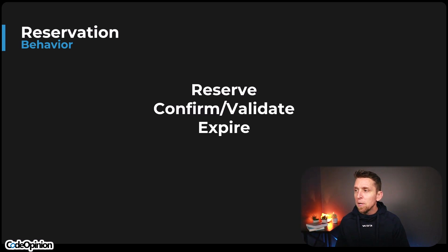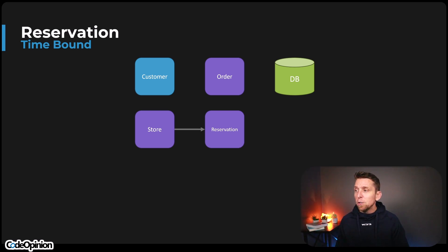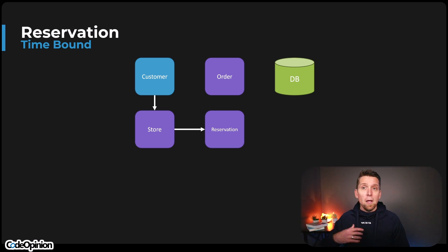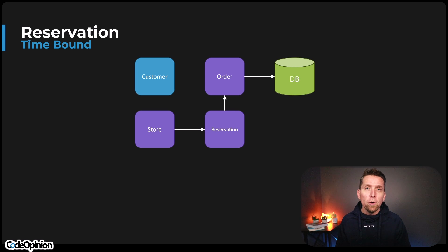The reservation pattern is really about creating a time-bound lock. There are three components: reserving (creating the reservation), confirming and validating that reservation, and expiring it if we didn't confirm it. The customer places an order, we persist it to the database, the store is notified and creates the reservation once it pulls the item from the shelf. Later, the customer goes to the store, the reservation is retrieved, the item is handed over, and the order is completed and persisted to the database. However, if the customer doesn't pick up the item, after seven days a scheduled event occurs that cancels the reservation, cancels the order, and refunds the payment.